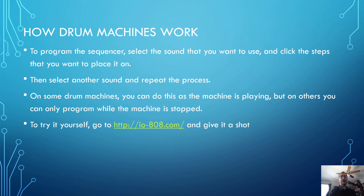To program the sequencer, you select the sound you want to use and click the steps you want that sound to occur on. Then you select another sound and repeat the process. On some machines you can do this while the machine plays; on others, you can only program when it's stopped. This is very similar to entering MIDI data for a drum sequence in a program like GarageBand or Ableton Live. If you want to try it yourself, go to io808.com — a great web-based emulator of the 808.